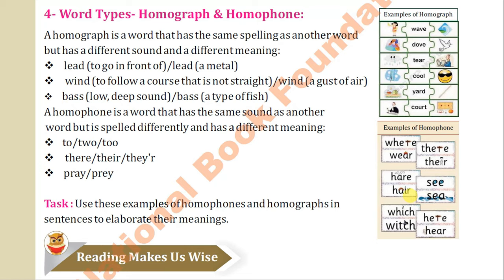Next is 'wind' meaning a gust of air — same spelling but different pronunciation. Next is 'bass' meaning a low, deep sound, and 'bass' is also a type of fish. Other examples of homographs include: wave (a wave in the sea, or waving to move your hands), dove, tear, cool, yard, coat — all these words have homograph pairs.